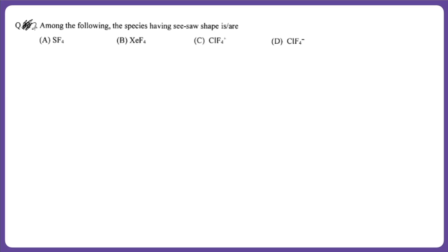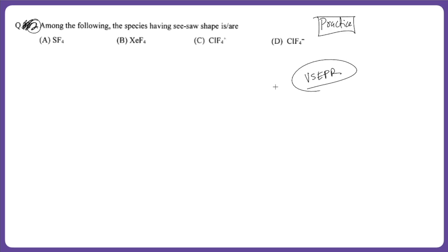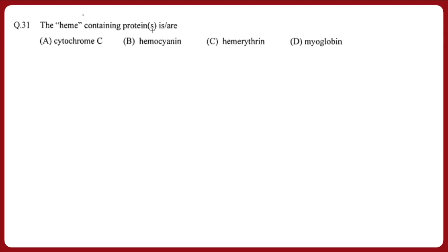One more question I am giving as practice question number two. It says: among the following, which species have a seesaw shape? It is based on the concept of VSEPR. I hope you all know this — please let me know the correct answer in the comment section below.